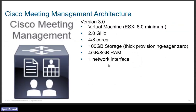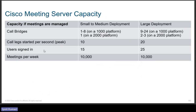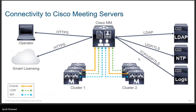For capacity, meetings are managed per call bridge, with call legs per second and user sign-ins per week depending on deployment type. For small to medium deployments: up to 10 call legs and 15 users signed in simultaneously. For large deployments: up to 20 call legs and 25 users signed in simultaneously. Meetings per week are up to 10,000 each.